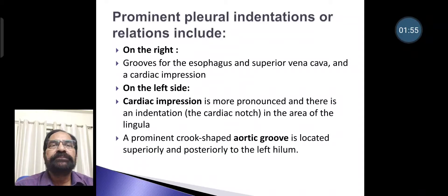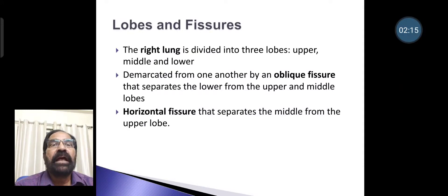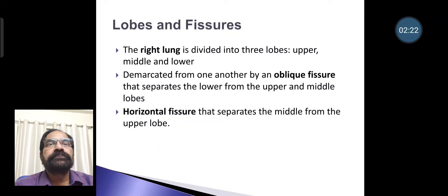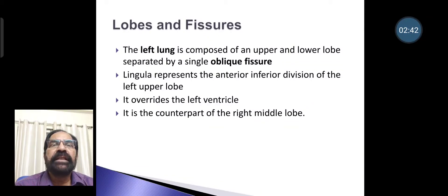A prominent crook-shaped aortic groove is located superiorly and posterior to the left hilum. Regarding lobes and fissures, the right lung is divided into three lobes — upper, middle, and lower — demarcated by an oblique fissure separating the lower from upper and middle lobes, and a horizontal fissure separating the middle from the upper lobe. The left lung is composed of upper and lower lobes separated by a single oblique fissure. The lingula represents the anterior and inferior division of the left upper lobe, overrides the left ventricle, and is the counterpart of the right middle lobe.